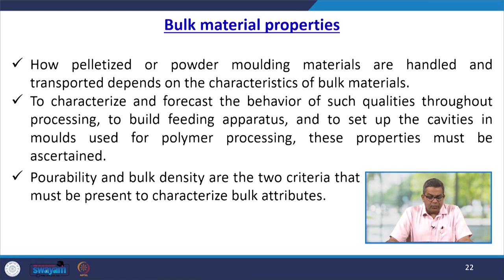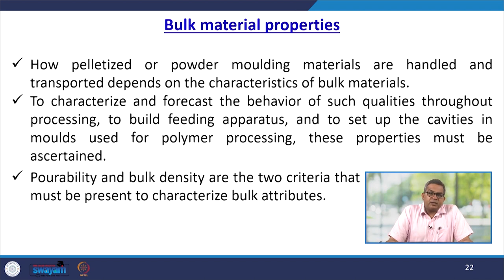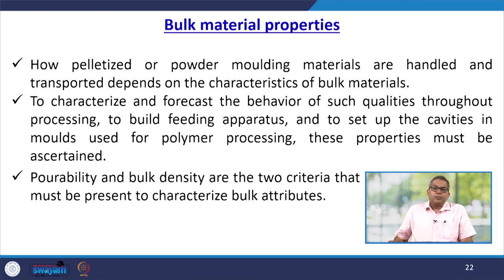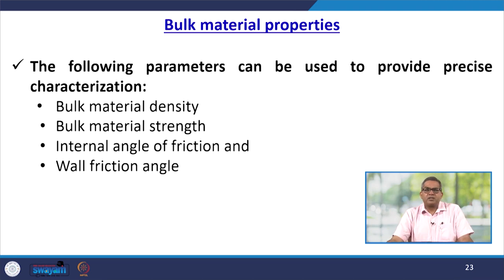Let us talk about the bulk material properties. How pelletized or powder molding materials are handled and transported depends on various characteristics of the bulk material. To characterize and forecast the behavior of such qualities during processing, to build feeding apparatus, and to set up the cavities in the mold, these properties must be ascertained. Pourability and bulk density are the two criteria used to characterize bulk attributes. Additional parameters include bulk material density, bulk material strength, internal angle of friction, and wall friction angle.